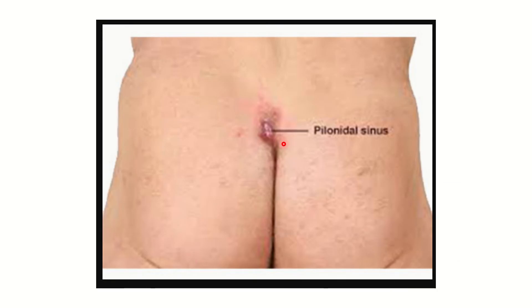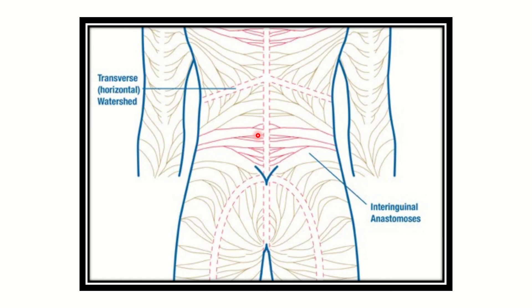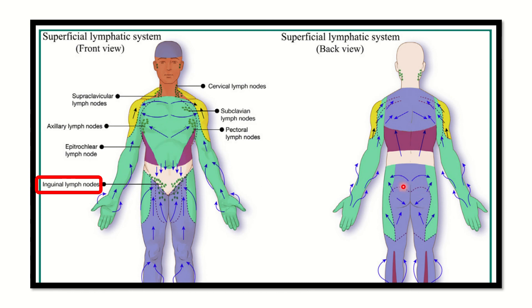First, we can see there is the pilonidal sinus area, and this pilonidal sinus lesion has finally developed as squamous cell carcinoma. We have to find out the draining lymph nodes of this region. We can see the pilonidal sinus is in this area, and here we can see the lymph nodes draining in different ways.